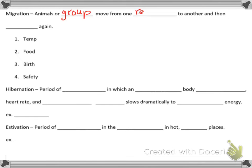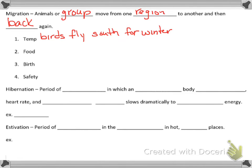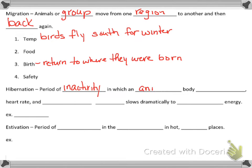Migration occurs when animals or a group move from one region to another and back again. They do this for a couple of reasons: for food, for temperature — birds fly south for the winter and return to where they were born. They also migrate when food becomes scarce due to environmental conditions, or for safety when there's an overpopulation of predators in their area.